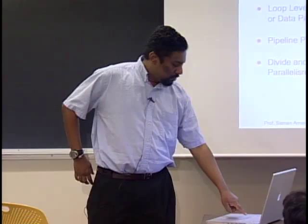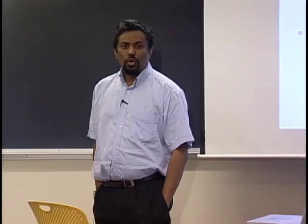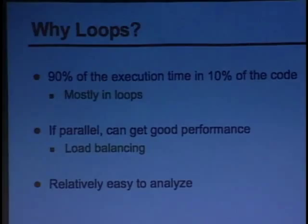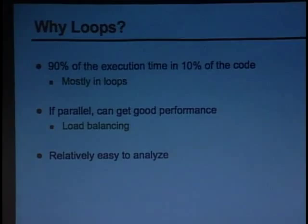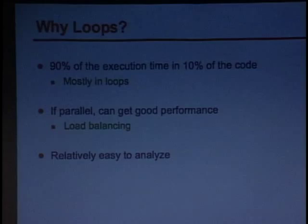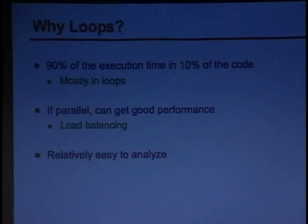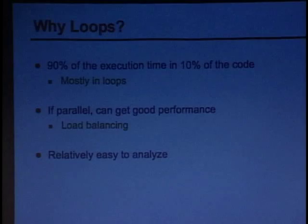Today we are going to focus on loop level parallelism — specifically, how to do loop level parallelism by the compiler. Why loops? Loops are interesting because in most code, 90% of execution time is in 10% of the code, and these are loops. Running at 3 gigahertz, you need repeatability, and a lot of times repeatability is in loops. If we can parallelize loops, you can get really good performance because most of the time each loop iteration has the same amount of work, giving you a nice load balance.